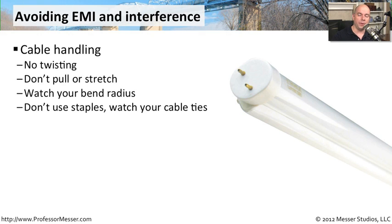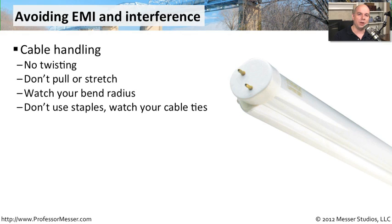There's also something called a bend radius — you don't want to make a 90-degree turn with the cable. Different types of cable allow different bend radius values, and the same applies to fiber. Check the manufacturer's requirements for the cable or fiber you're using to determine the correct angle of bend. Also make sure you don't use staples or cable ties — anything that could possibly kink or cause a problem with the copper or fiber inside that bundle of cables.